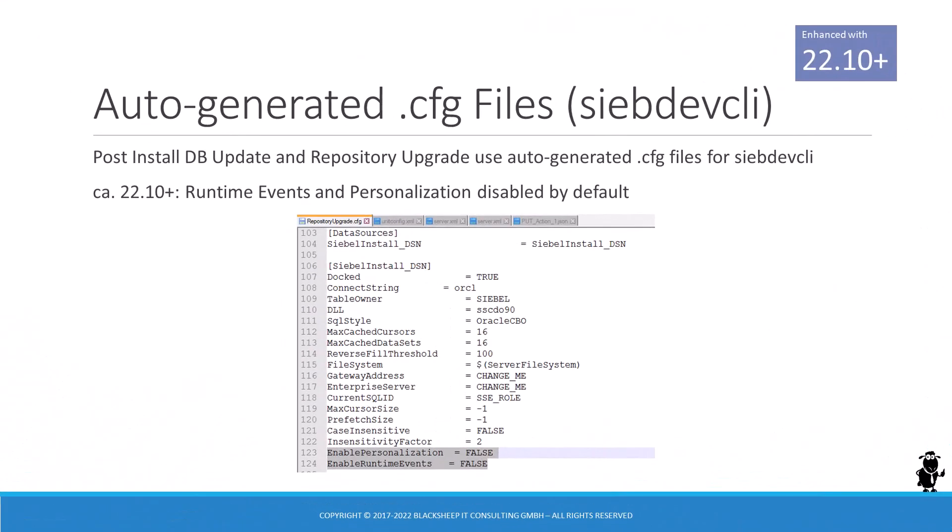The repository upgrade utility and the mandatory post-install database update utility generate command-line requests for siebdev-cli, the headless Siebel Tools variant. This utility, like the siebdev executable that drives Siebel Tools, reads a configuration file. When siebdev-cli is run by repository upgrade or post-install database update, the configuration files are generated automatically. In recent versions, the parameters to enable personalization and runtime events are set to false, ensuring that these automation tools do not interfere with Siebel Tools functionality. If you use siebdev-cli with a custom configuration file, you might want to apply these settings as well.